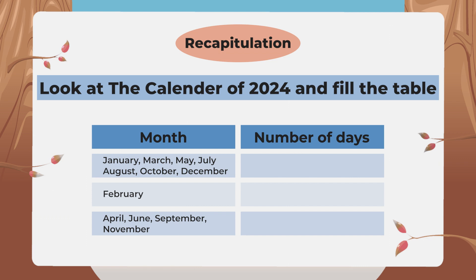Let's recapitulate. Through the activity and story, we learned how many days are in each month. Now write the number of days for each month in the given table. There are 31 days in January, March, May, July, August, October, and December; 29 days in February; and 30 days in April, June, September, and November.